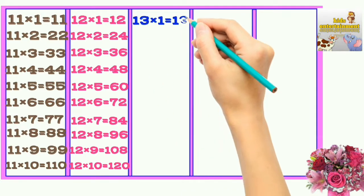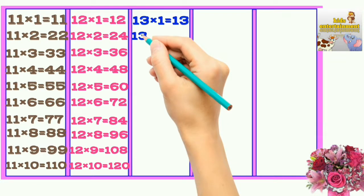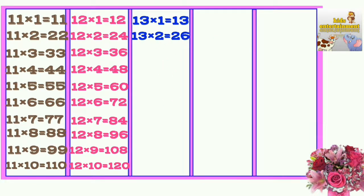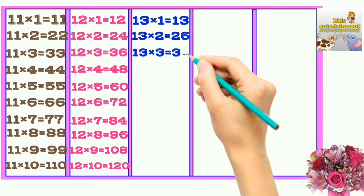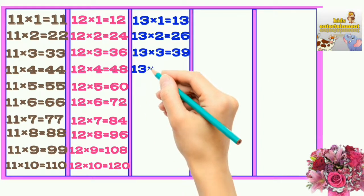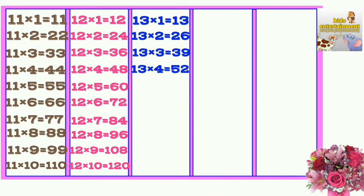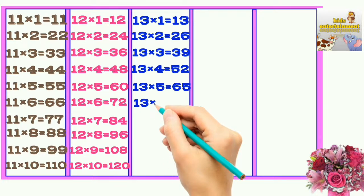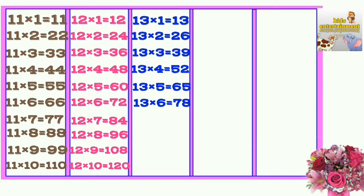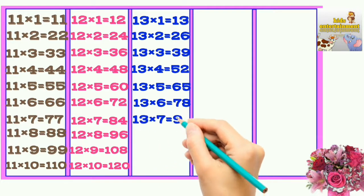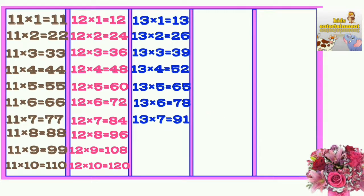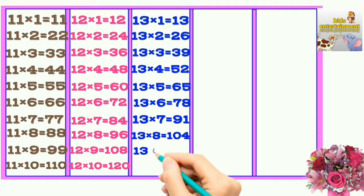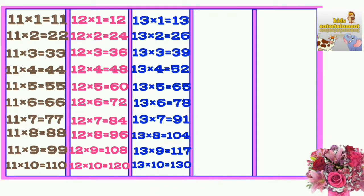13×1=13, 13×2=26, 13×3=39, 13×4=52, 13×5=65, 13×6=78, 13×7=91, 13×8=104, 13×9=117, 13×10=130.